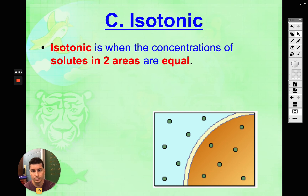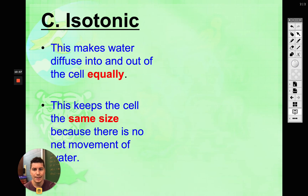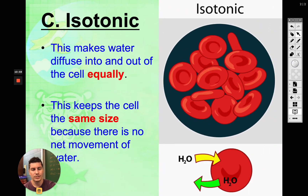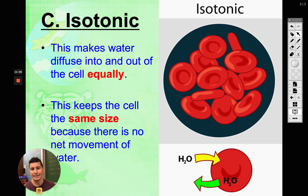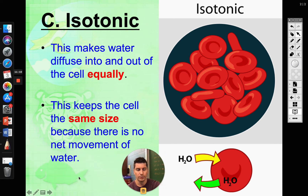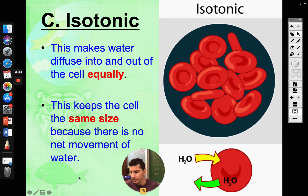Isotonic is when our concentrations of solutes are equal. When this happens, the cell is actually going to stay the same size. Do we still have water movement? Yes, but the water moving into the cell is the exact same amount as the water moving out of the cell. So that is isotonic — overall, the cell is going to stay the same size.